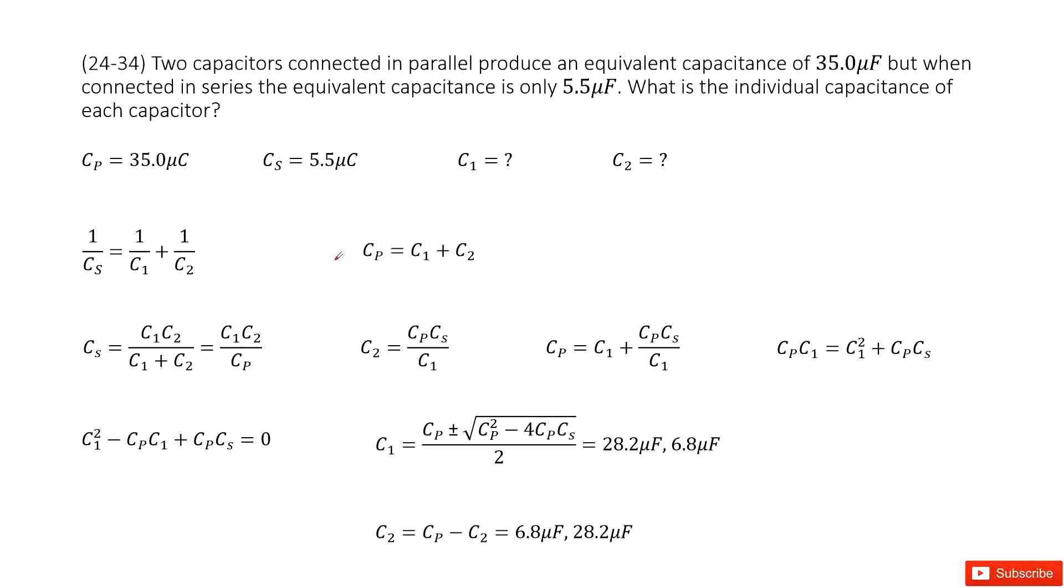So we can see we have two capacitors, right? If it is a parallel connection, the equivalent capacitance is 35 microfarads. And then if it is a serial connection, the equivalent capacitance is 5.5 microfarads. And then ask you the capacitance for each one.